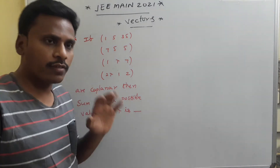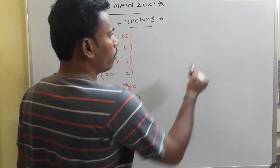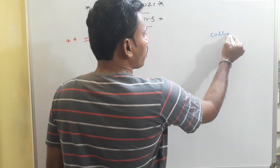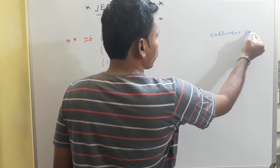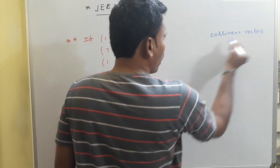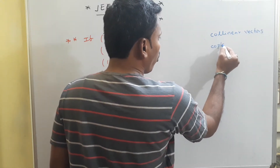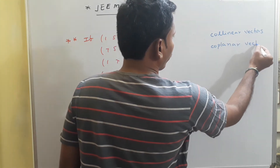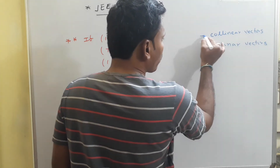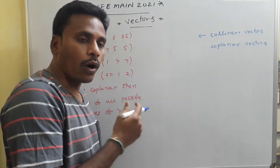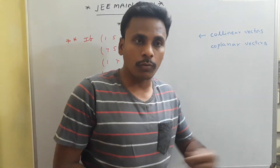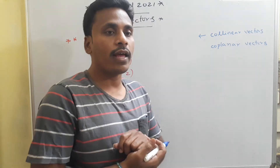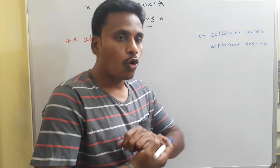The next problem is again from JEE Mains 2021. The previous problem was about collinear vectors, whereas this problem is about coplanar vectors. For collinear vectors, one vector is some constant multiple of the other. Coplanar vectors, on the other hand, deal with three or more vectors lying in the same plane.